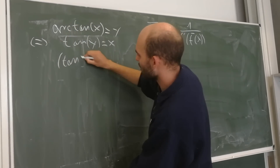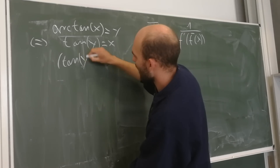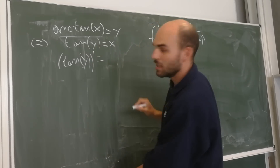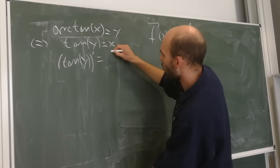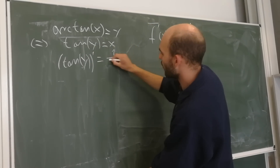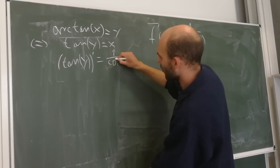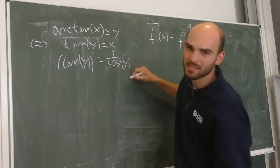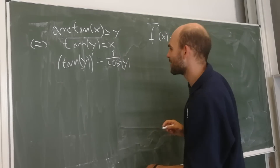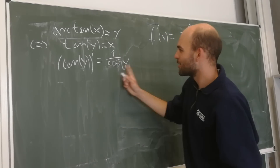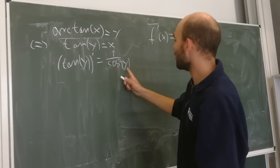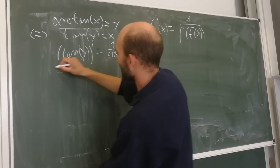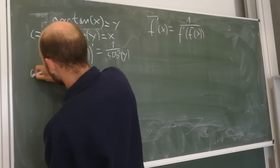We know that the derivative of tangent(y) equals 1 over cosine squared of y — this is elementary — so we know this for sure. Now let's plug that in.